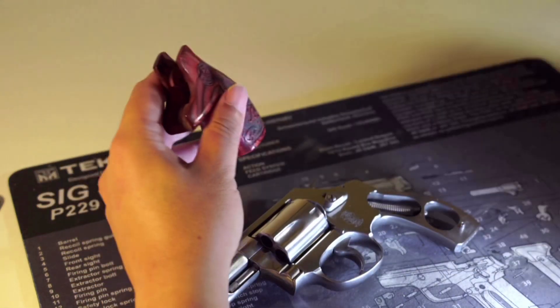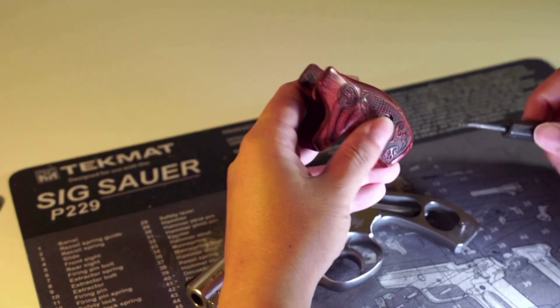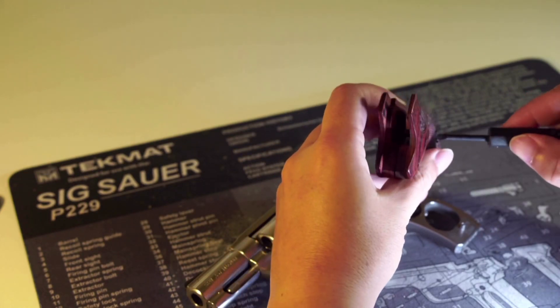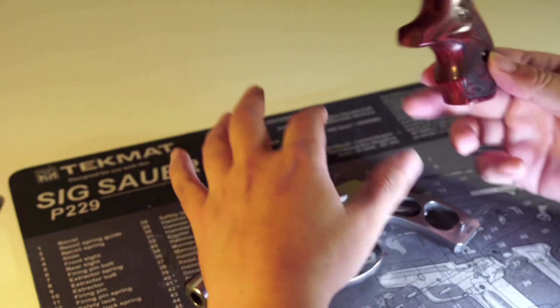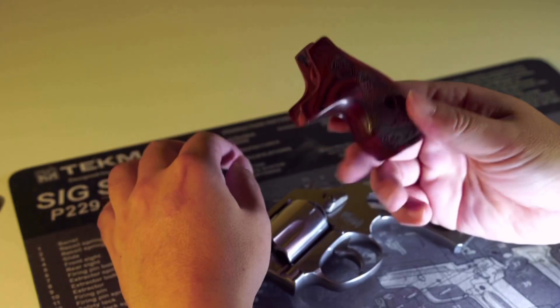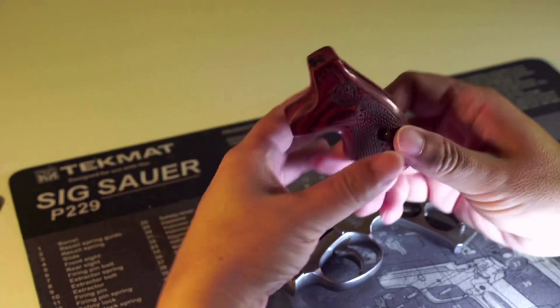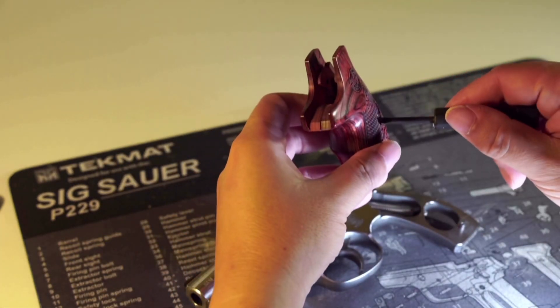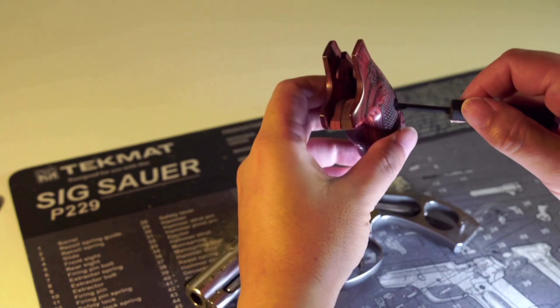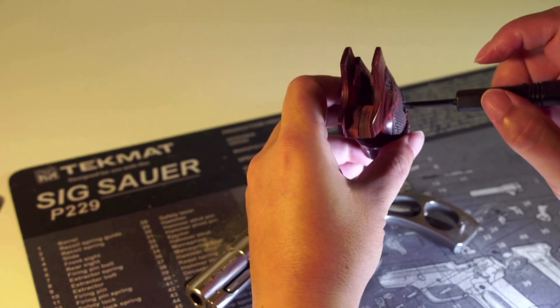The next grip is also made by Altamount. It's called the boot grip. It's also in rosewood. And I really like rosewood because it complements the stainless steel very well.